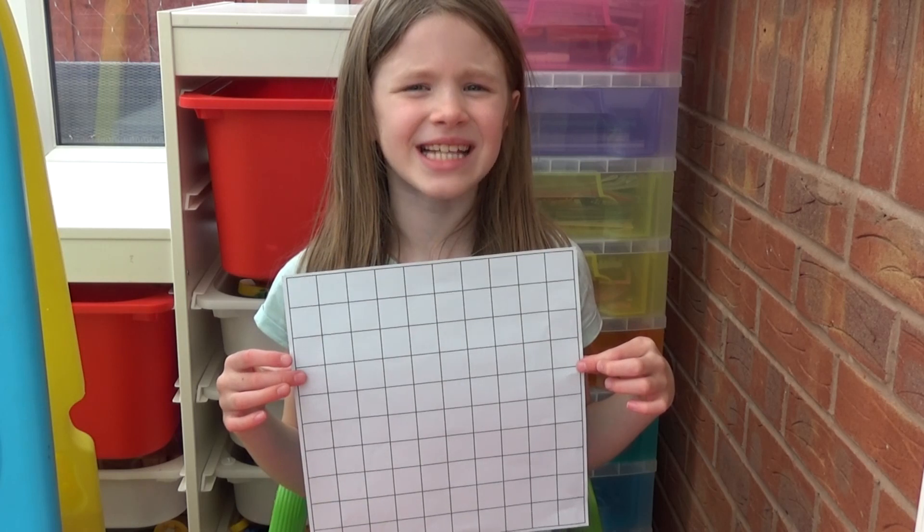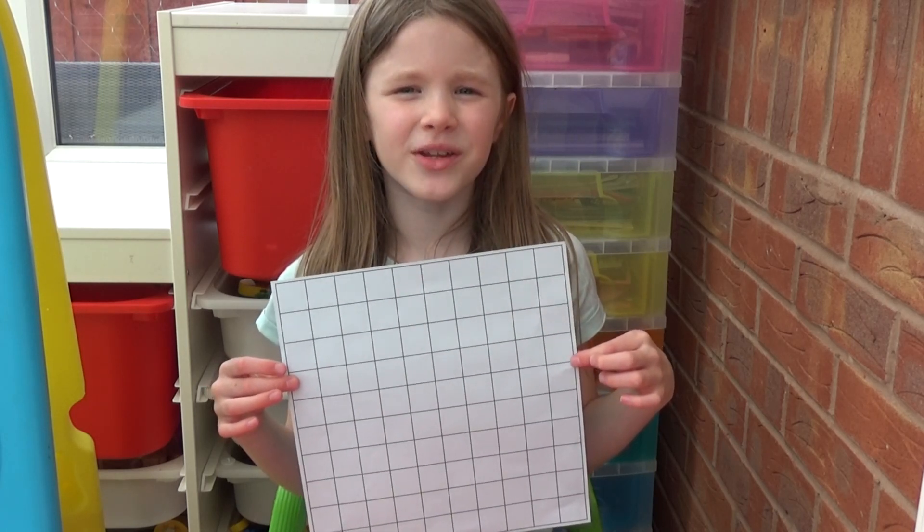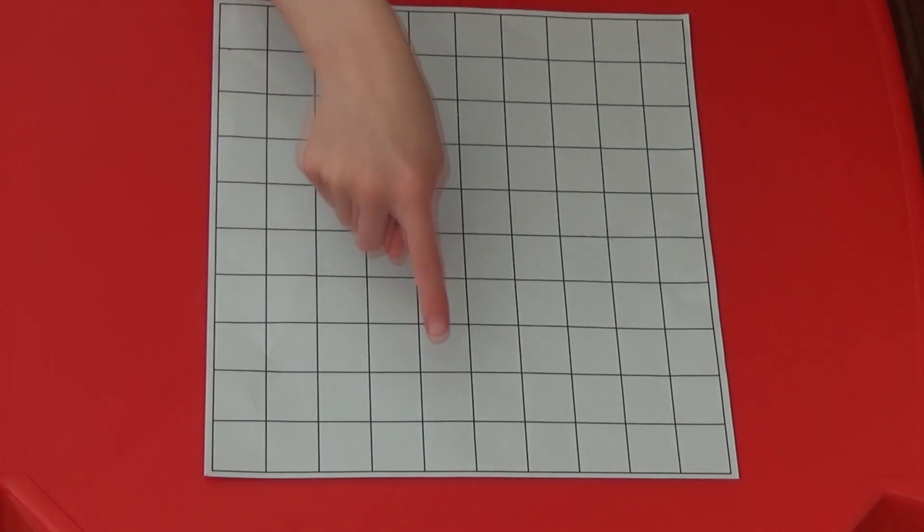Each player takes 10 turns to fill in a number on the blank hundred square. The aim of the game is to get as many horizontal, vertical or diagonal lines as they can. Make sure you check carefully that you're writing the correct number into each square.